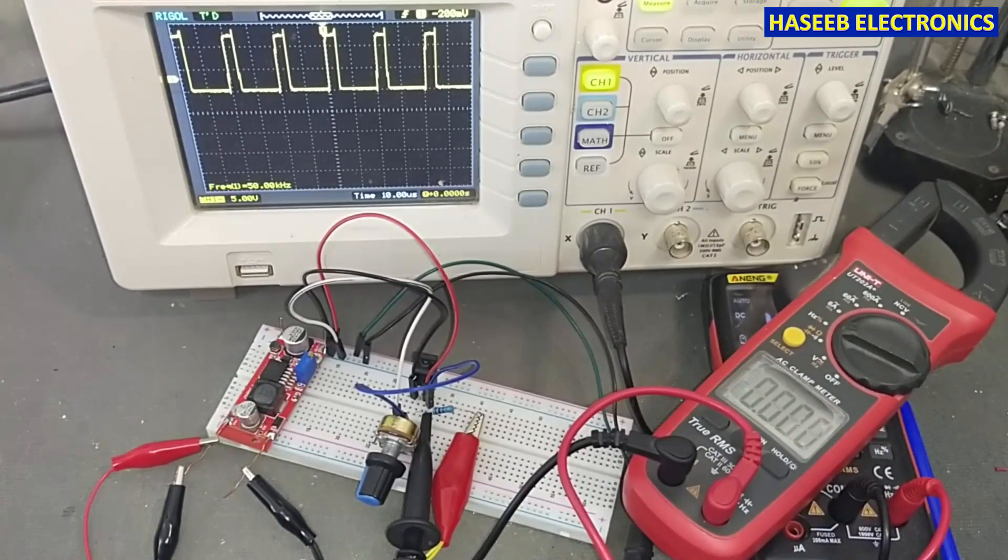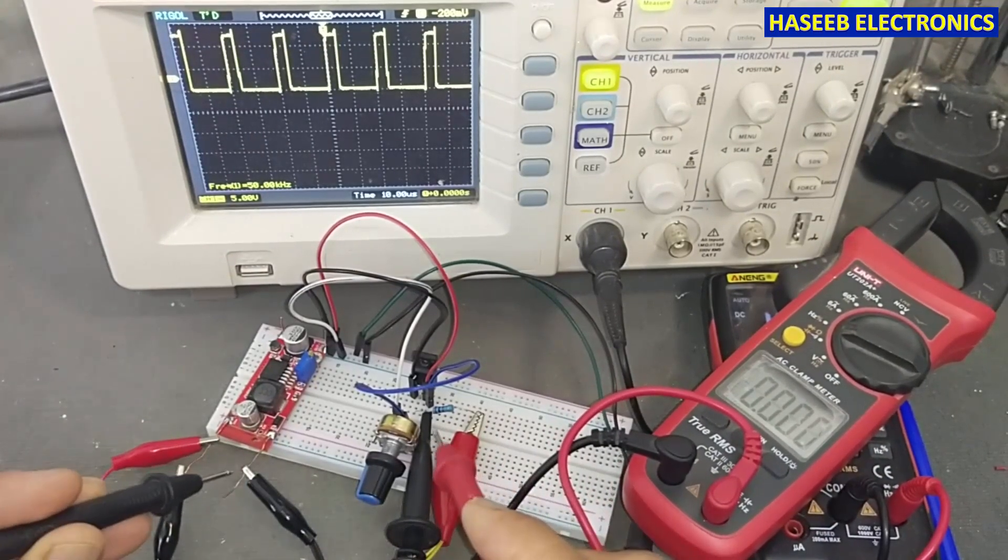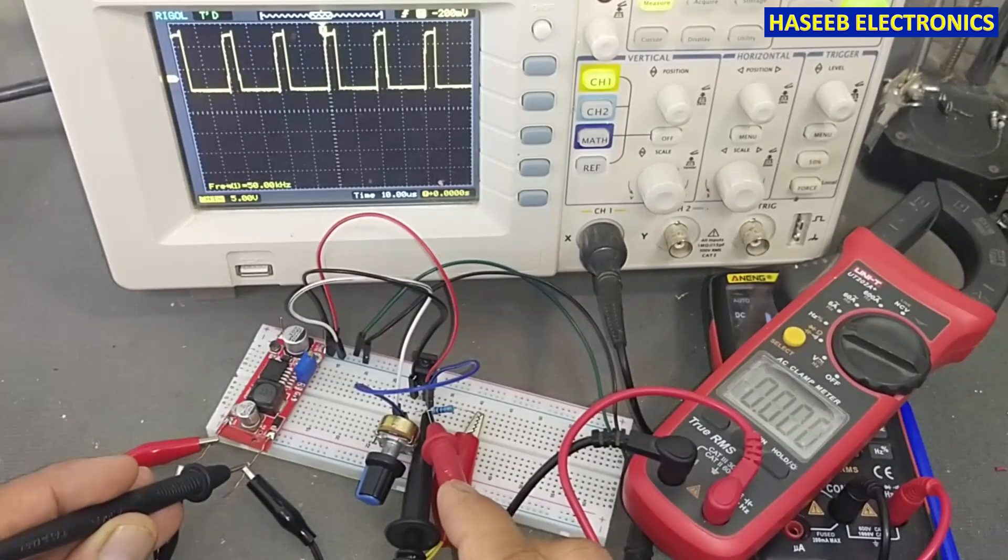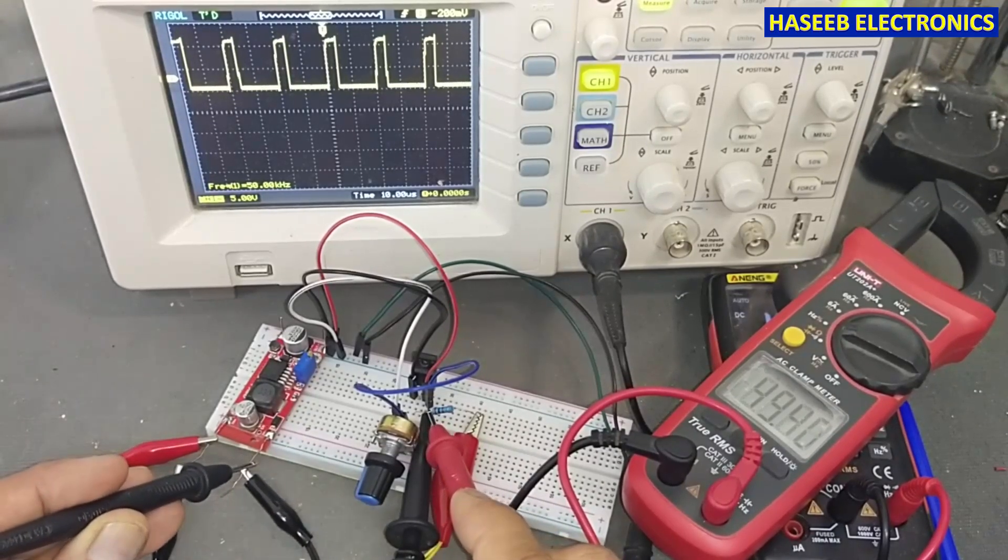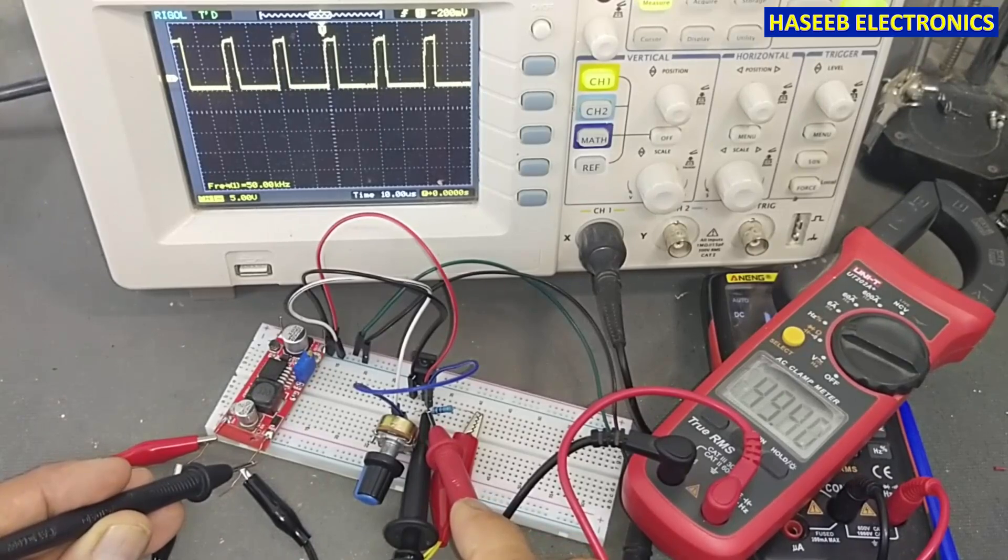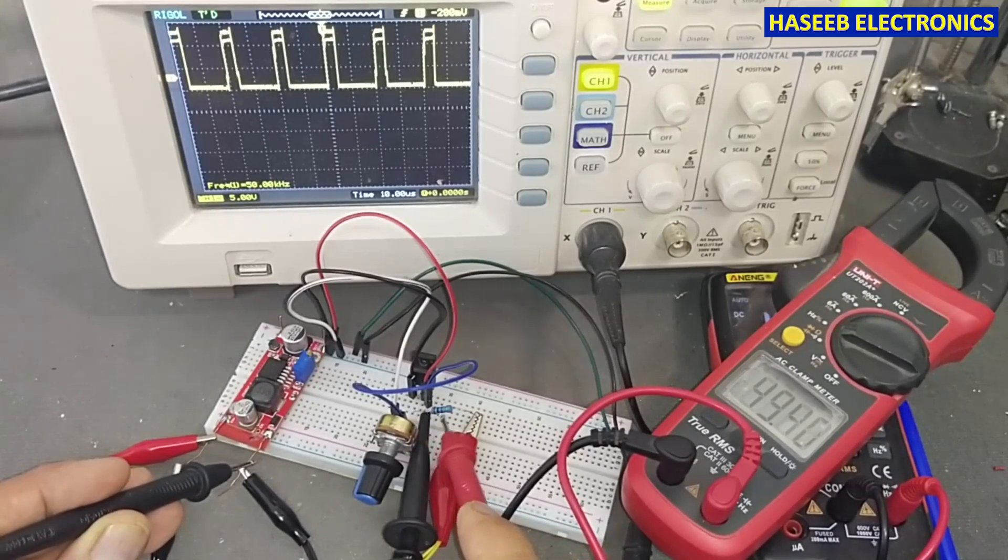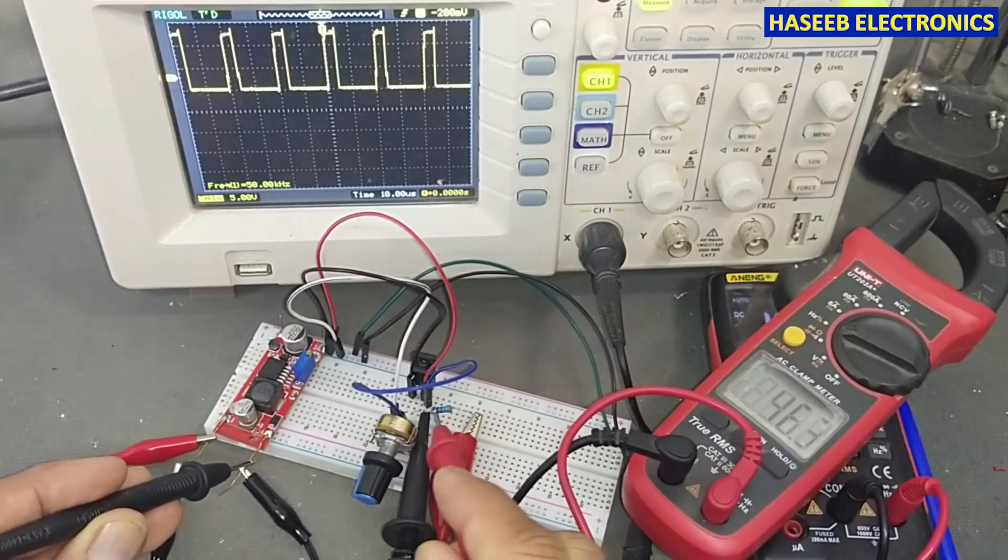If I check frequency using this multimeter between ground and pin number 2, we can see 49.4 kilohertz. Excellent. If I check the duty cycle, it is showing 21 percent.